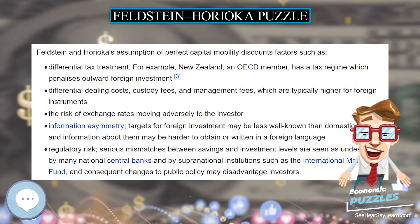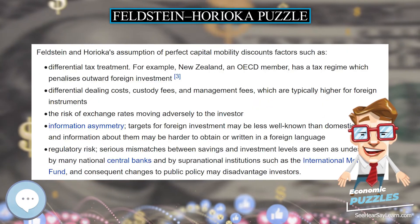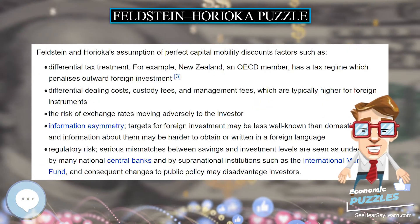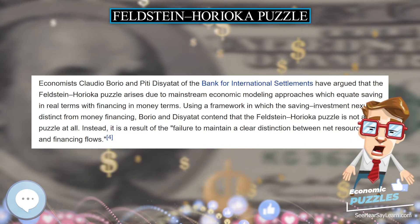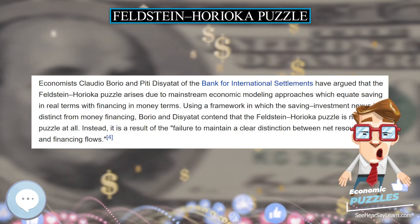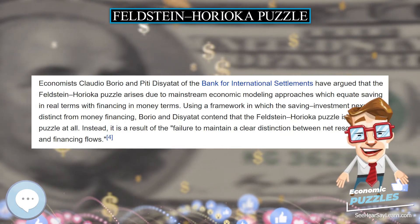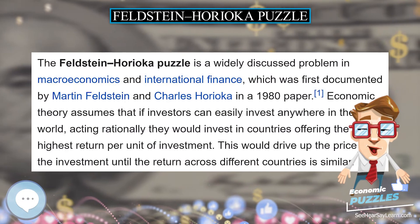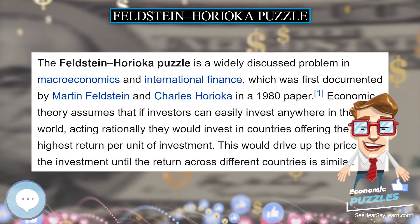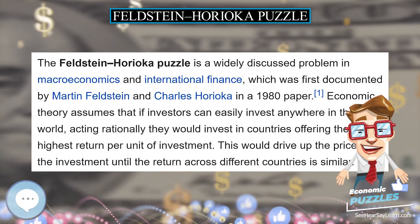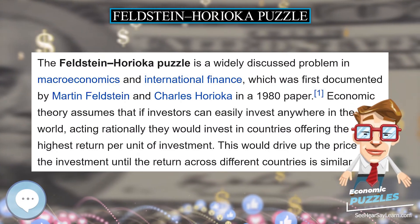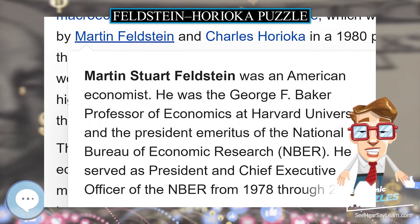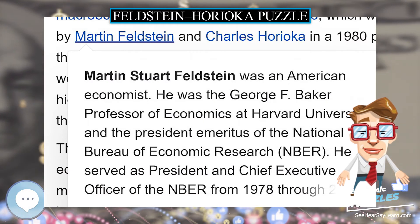Feldstein and Horioka's assumption of perfect capital mobility discounts factors that apply to the hypothetical rational investor. Additionally, some investors are chauvinistic, seeing it as more patriotic to invest domestically, a view encouraged by some governments.